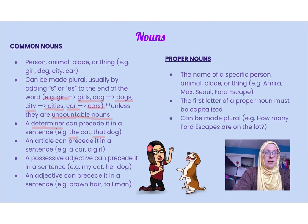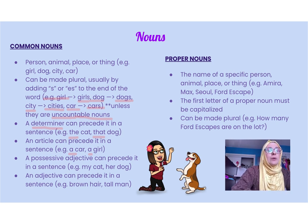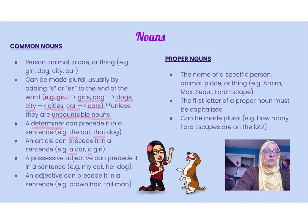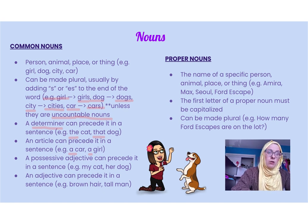Articles like 'the' and 'a' can precede nouns — for example, 'a car', 'a girl'. We can also use possessive adjectives in front of them, like 'my cat' or 'her dog'. We can also use adjectives to describe nouns — that's the main purpose of an adjective. So if we have an adjective in front of a noun or describing a noun using the verb 'to be', then we know that must be a noun. For example: brown hair, tall man.